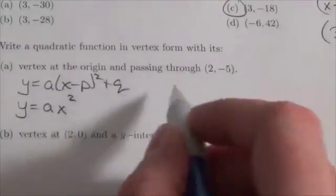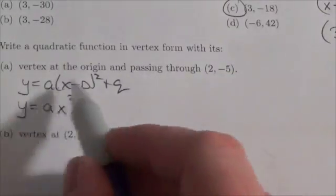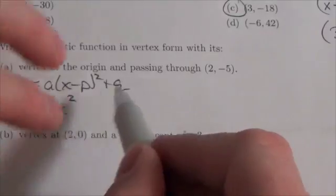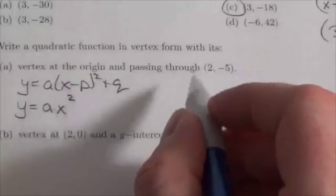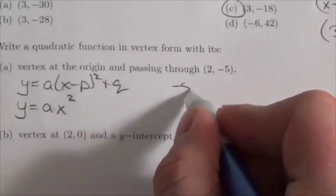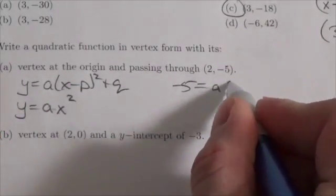You can tell really quickly whether people understand the relationship between the equation and the grid when they start to substitute into the equation. So -5 equals a times 2².